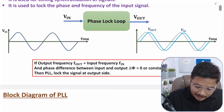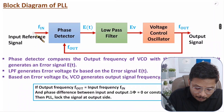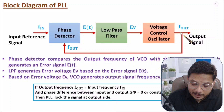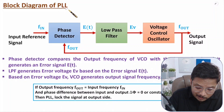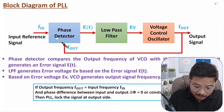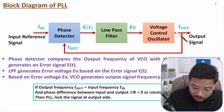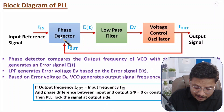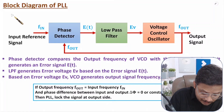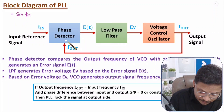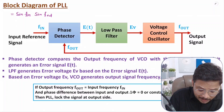Let us see the block diagram. We have an input reference signal, and based on it the output is generated. There are three major blocks in Phase Lock Loop. The first is the phase detector, which takes two inputs: the input reference signal and the feedback from the VCO. The phase detector is simply a multiplier — if the input signal is sine(f_in) and the output is sine(f_out), the phase detector multiplies these two signals.